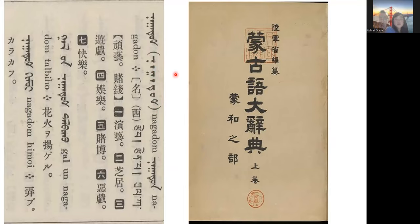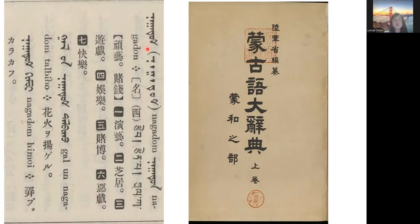For beginners who are confused about word components, this dictionary is pretty good and it has pronunciation. The downside is it's in Japanese, not English. You can find it for free on the Japanese National Library. I chose the word 'Nadam' as an example — Nadam is the biggest festival in Mongolia, held in July and August. In the dictionary, 'nadamid' is translated as 'asobu' in Japanese.